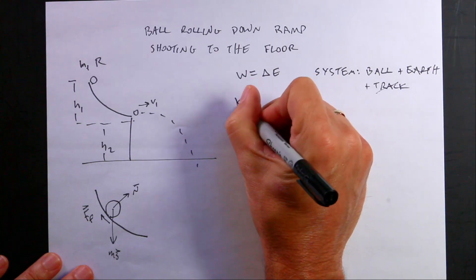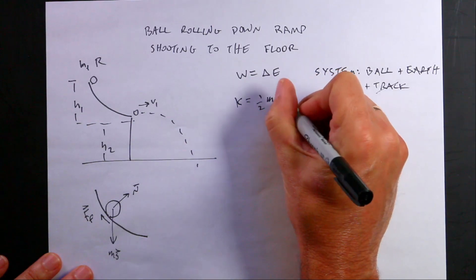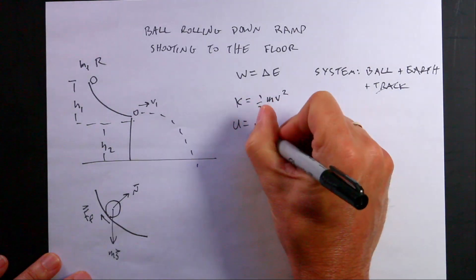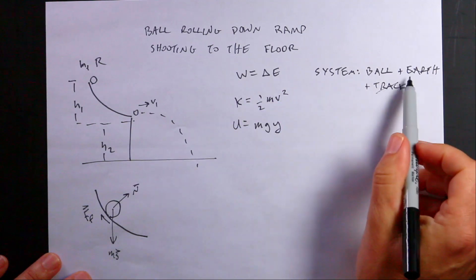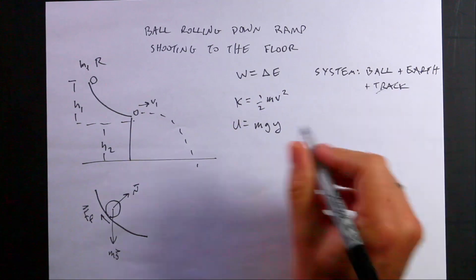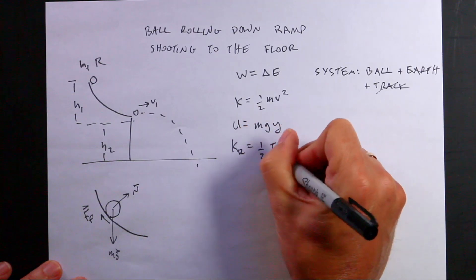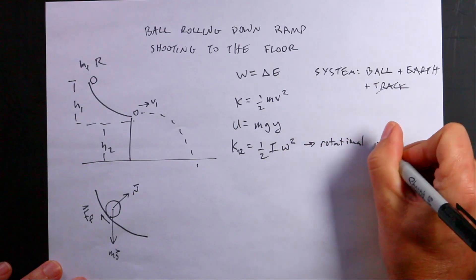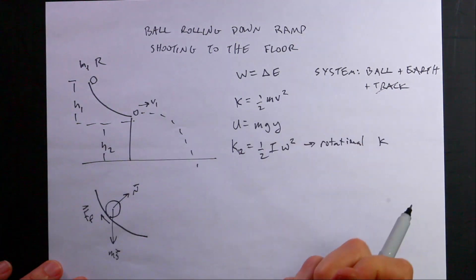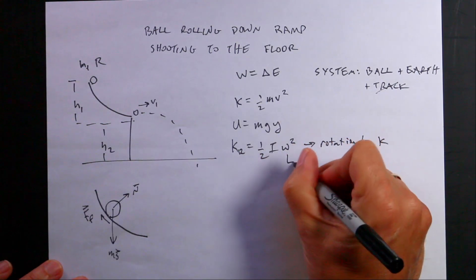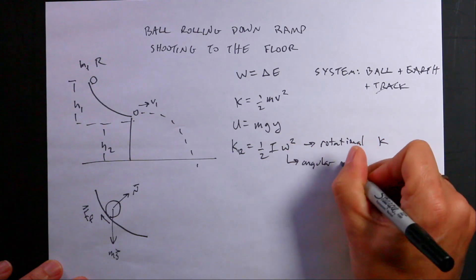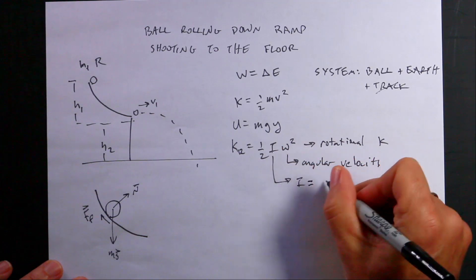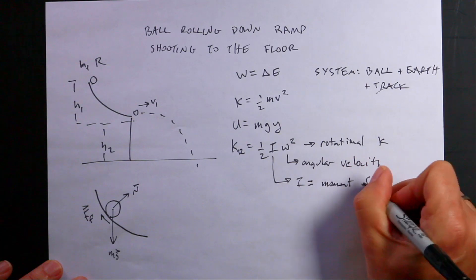So I'm going to have three kinds of energy. K equals one half mv squared, that's the kinetic energy of the ball because it's moving. U is mgy, this is the gravitational potential energy because I'm including the ball and the earth in the system. And then Kr is one half I omega squared, this is rotational kinetic energy due to the ball spinning. In this case, omega is the angular velocity and I is the moment of inertia.